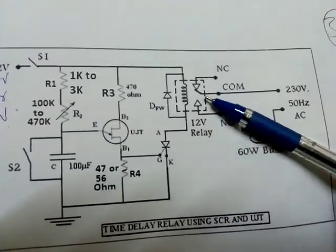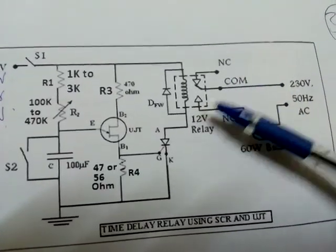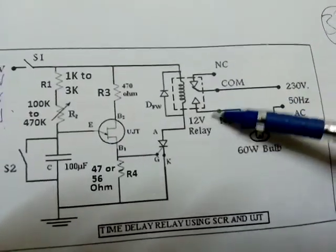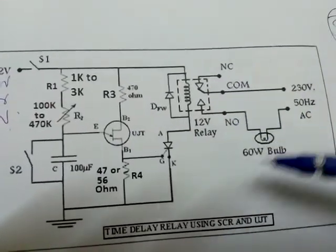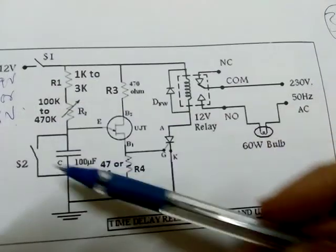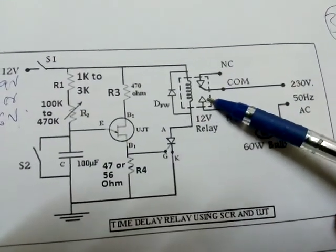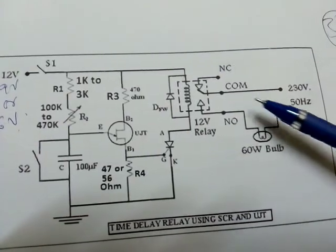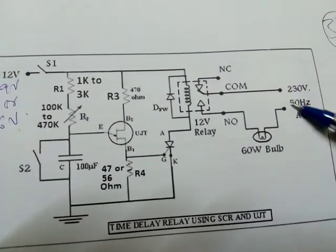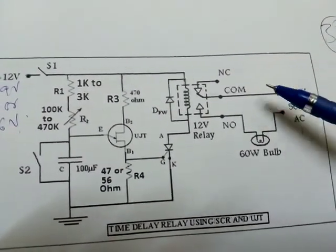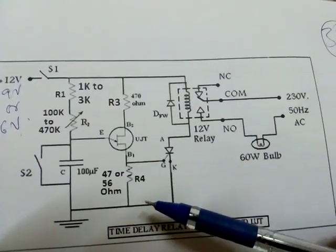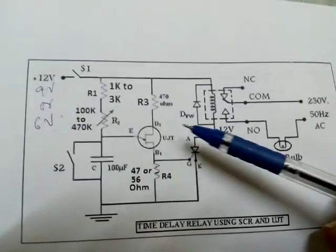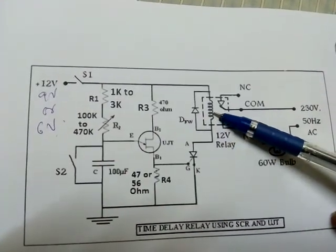First, you short common and NO. Then, bulb should glow whatever the condition here may be. Because, directly you are shorting. That means, the bulb is ok, these wires are ok, the AC is ok. Then, let us see how much voltage the relay is.